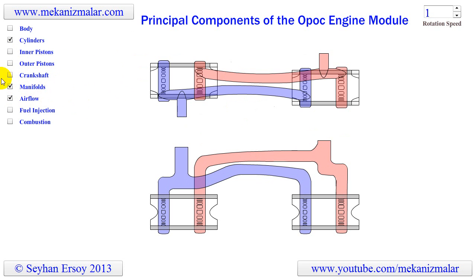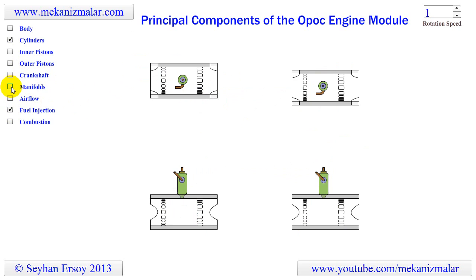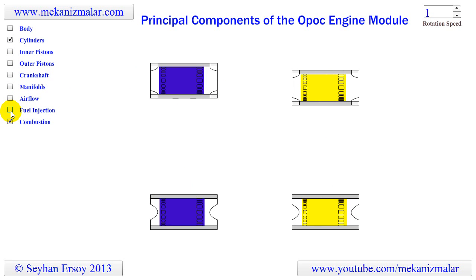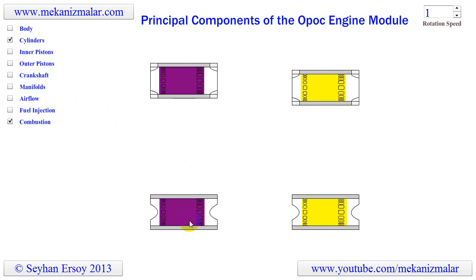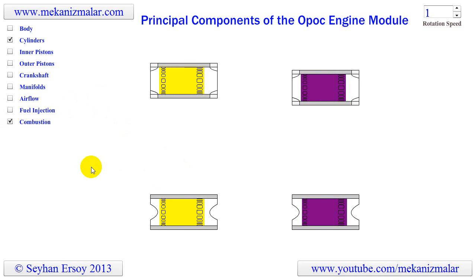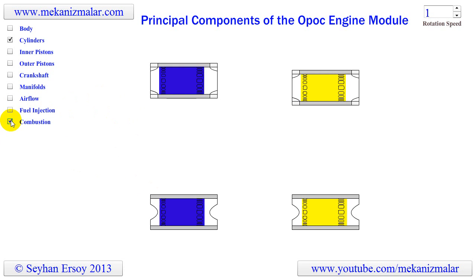Fuel is injected into the cylinders when the two opposed pistons are closer to top dead center. The color code used inside the cylinders is as follows: blue indicates fresh inlet air, which gradually changes to dark red to indicate compression, and finally yellow indicates the ignition and expansion process.